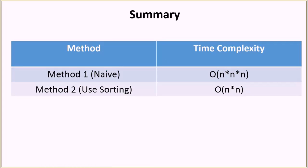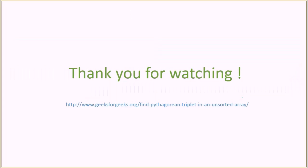In total, we discussed two methods. The first was the naive method with O(n³) time complexity. The second used sorting and achieved O(n²) time complexity. That is all for this tutorial — visit the link to find all the material discussed and run the code on the GeeksforGeeks website. Thank you very much.